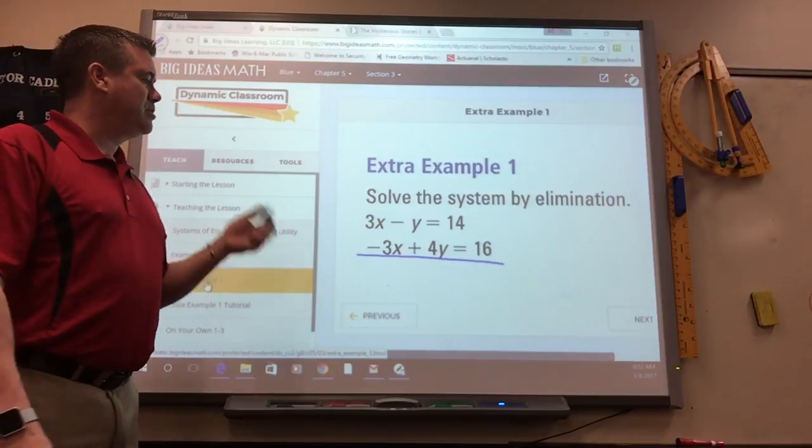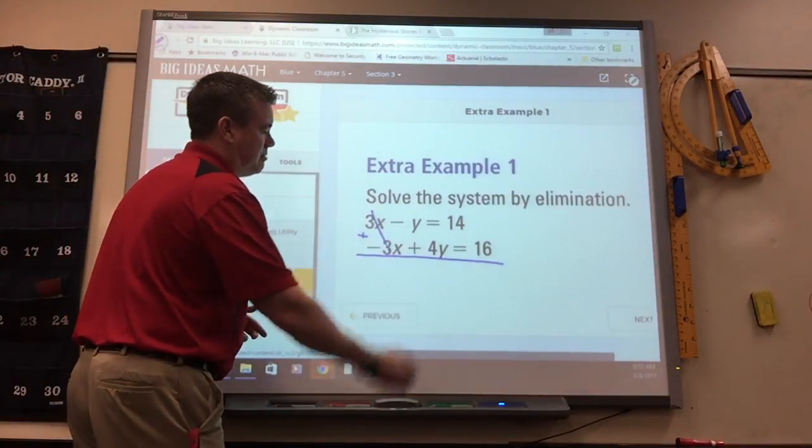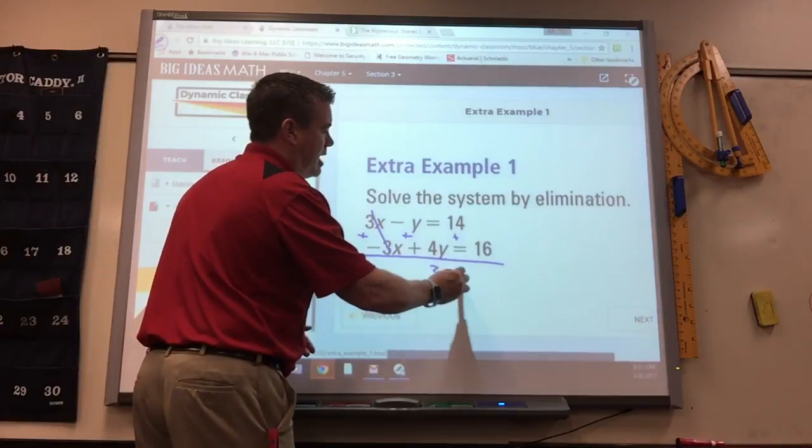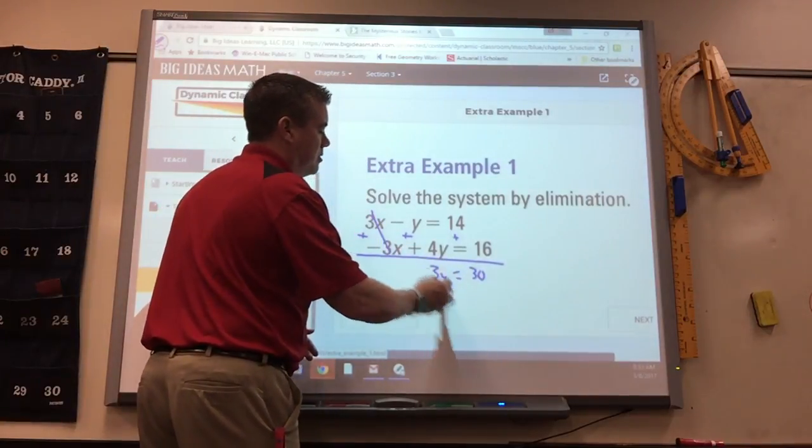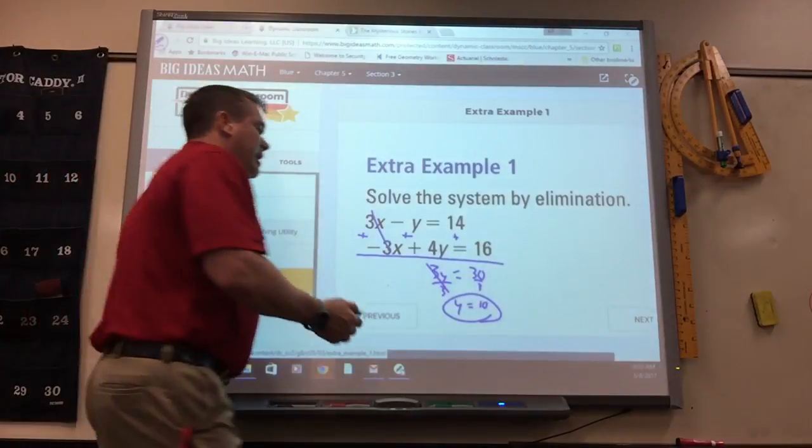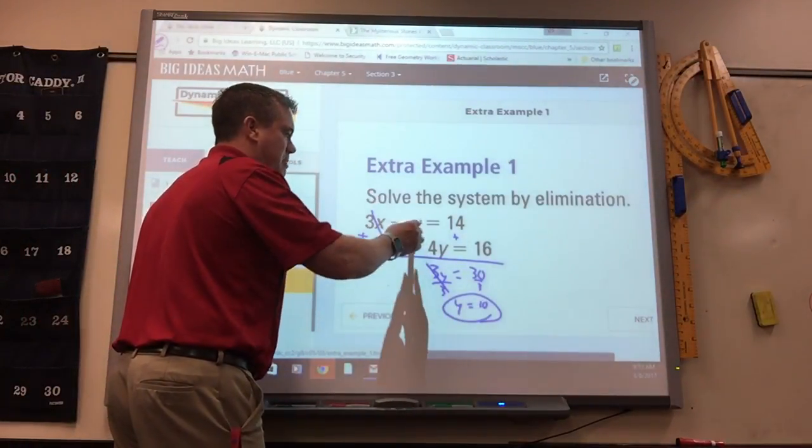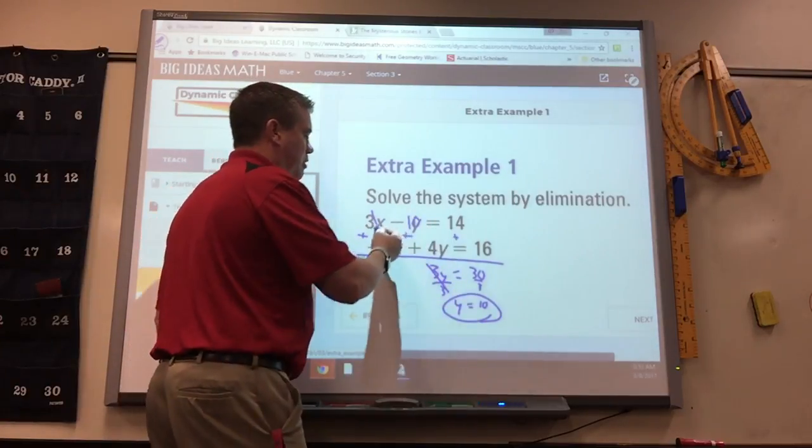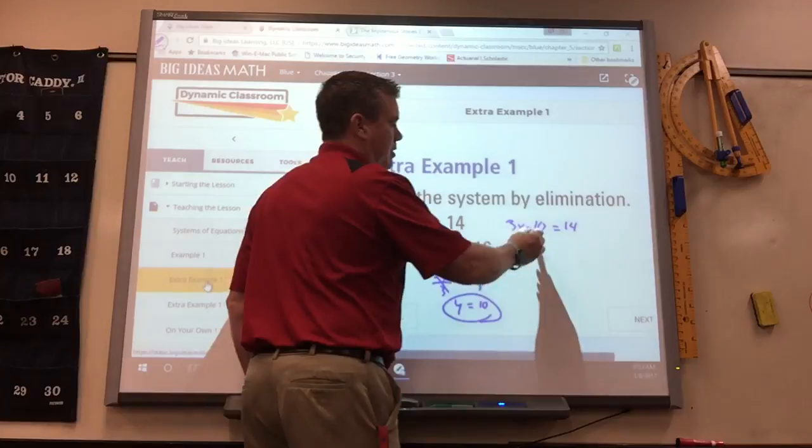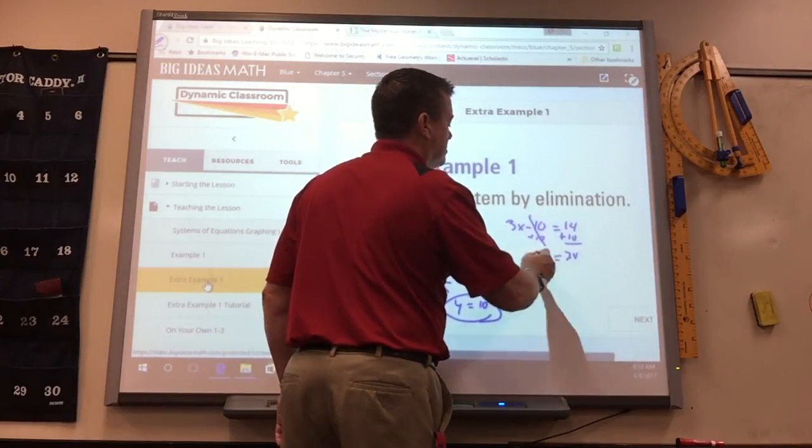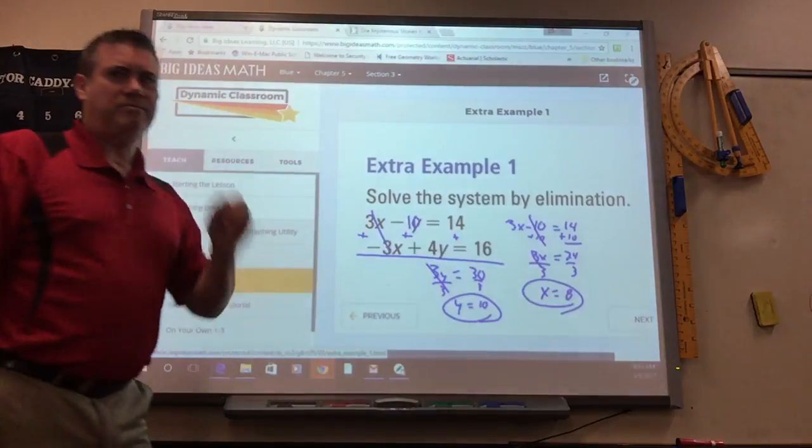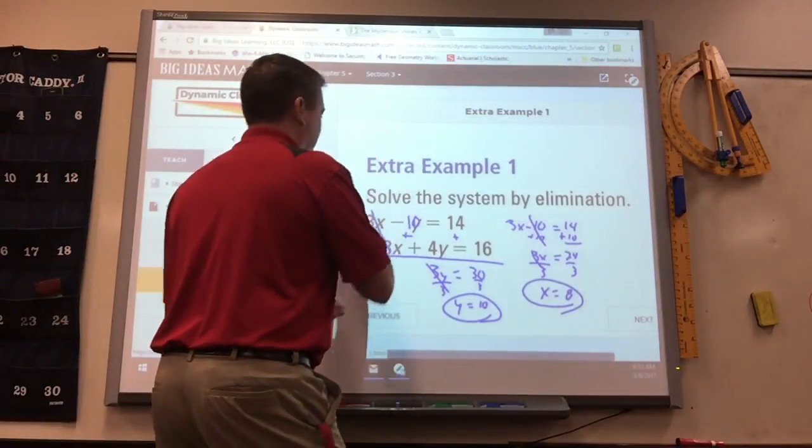So then you got to decide am I going to add them to eliminate or subtract them? Add. Because 3 plus negative 3 is 0. So whatever you do to eliminate that, that's what you do to the rest. Negative y plus 4y is 3y. 14 plus 16 is 30. Divide by 3 and y is 10. A lot easier than graphing them. So then what you got to do is you got to substitute that into one of these equations. So if I rewrote this, it'd be 3x minus y, which I know is 10, equals 14. And then you just solve it. Add 10, divide by 3, x is 8.